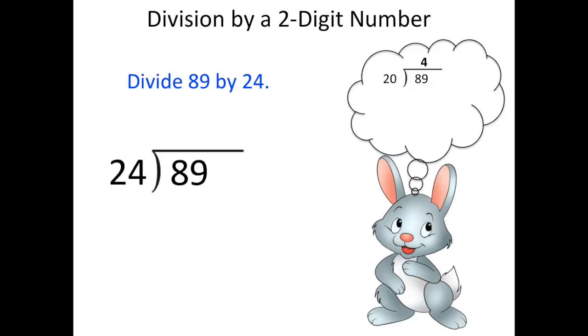Now he's choosing to round 24 to 20 to estimate about how many times 24 can go into 89. So 20 can go into 89 four times. So the estimated quotient is 4. That's what he's going to start with when he solves 89 divided by 24.